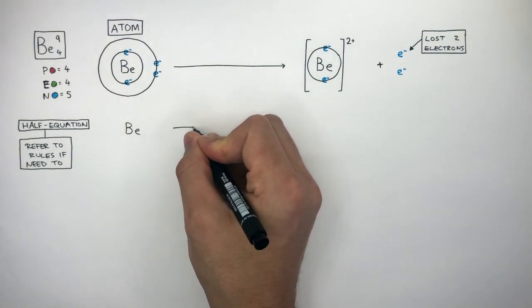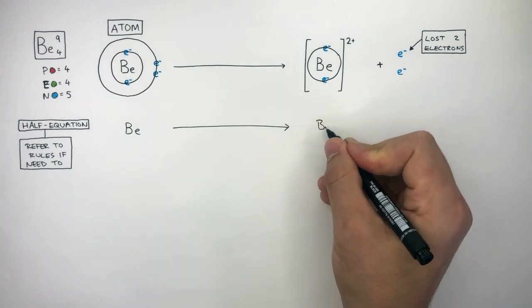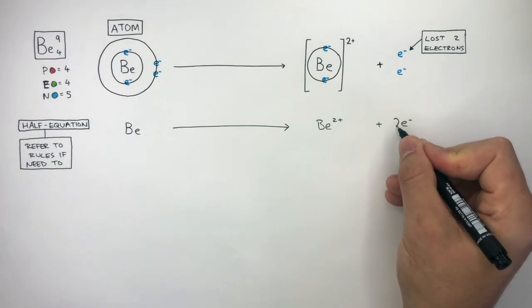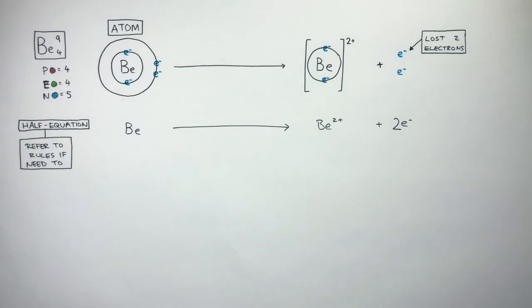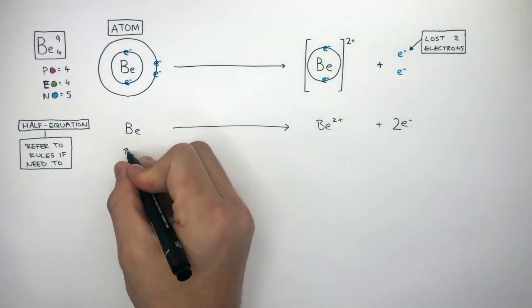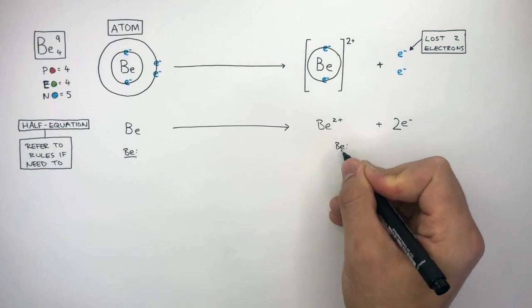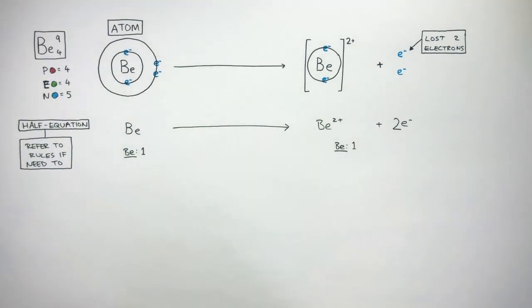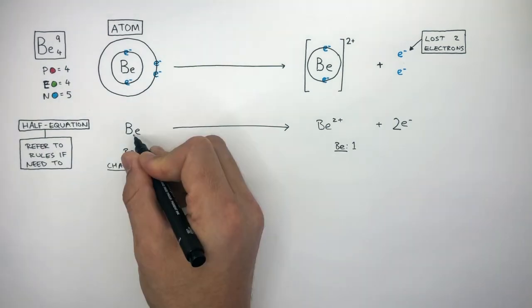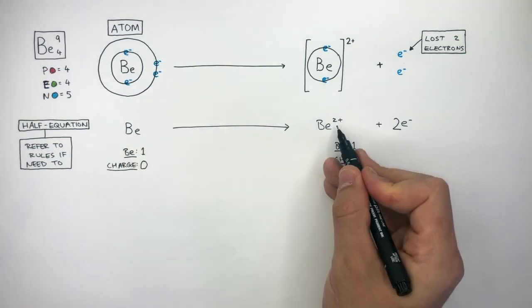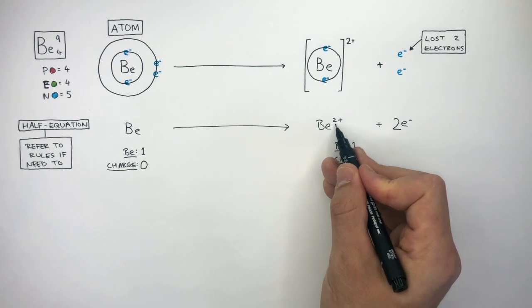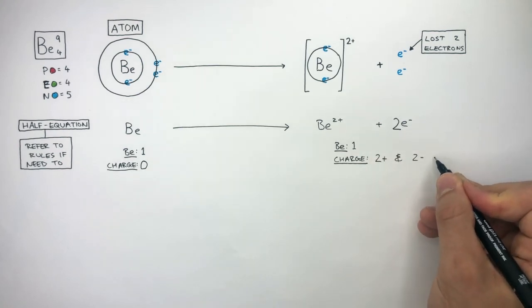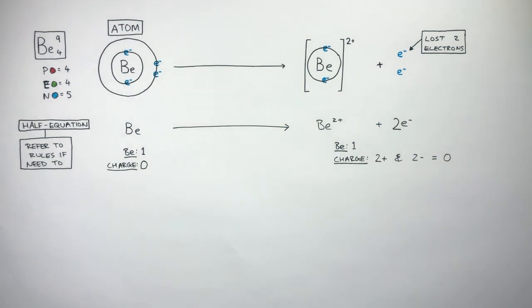We write Be to represent the atom, an arrow to show something has happened, Be2+ for the beryllium cation, plus 2e− to show two electrons have been lost. Using the first rule, there is a beryllium atom on the left and a beryllium cation on the right. Using the second rule, there is one beryllium atom on the left and one beryllium cation on the right. The beryllium atom on the left has a charge of zero, and the beryllium cation has a charge of 2+. The two electrons have a charge of 2−, so 2+ and 2− equals a charge of zero. The charge is balanced on both sides.